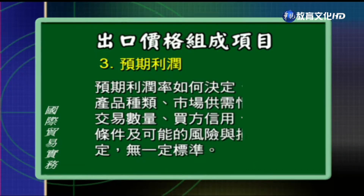第三项出口价格组成的项目就是预期的利润了。预期利润应该要怎么决定，其实并没有一定的标准，因为要看产品的种类、整个市场的供需情况、竞争是不是激烈，以及买方所买的交易数量多或少、买方的信用好不好、付款的条件，还有可能的风险跟损失，都是必须考量的。所以预期利润率要怎么决定，就有赖厂商根据过去的经验还有同业之间的经验来决定大概要抓几%了。